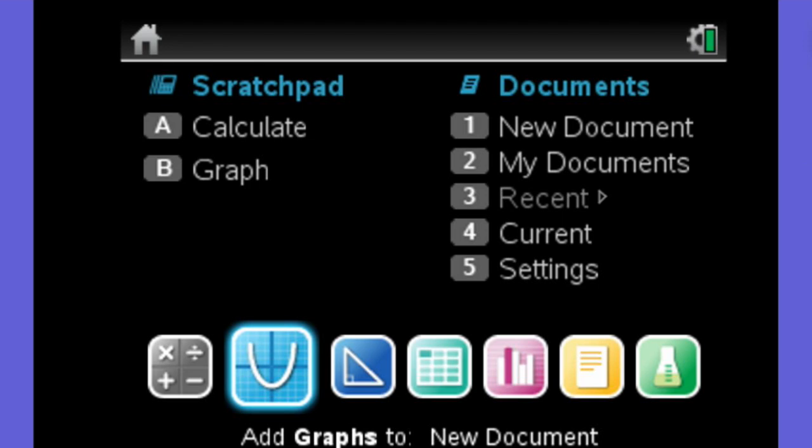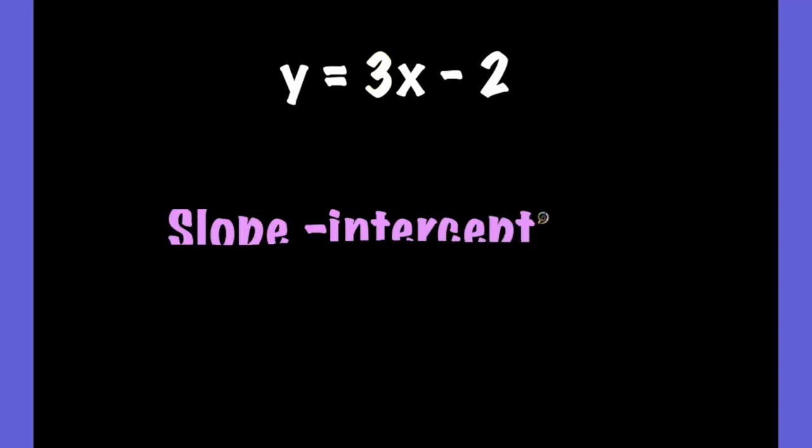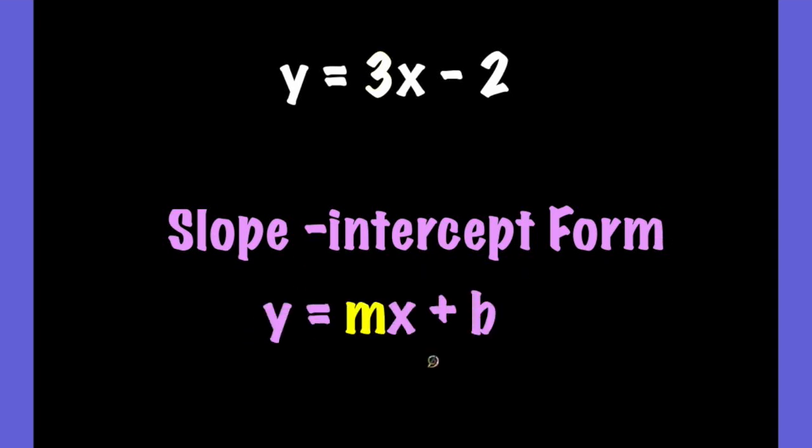If we were given the equation y equals 3x minus 2, many of us can identify the slope just by looking at the coefficient, because this equation is in slope-intercept form. We know that slope-intercept form is y equals mx plus b, where the coefficient of x is the slope. In this case, the slope is 3.